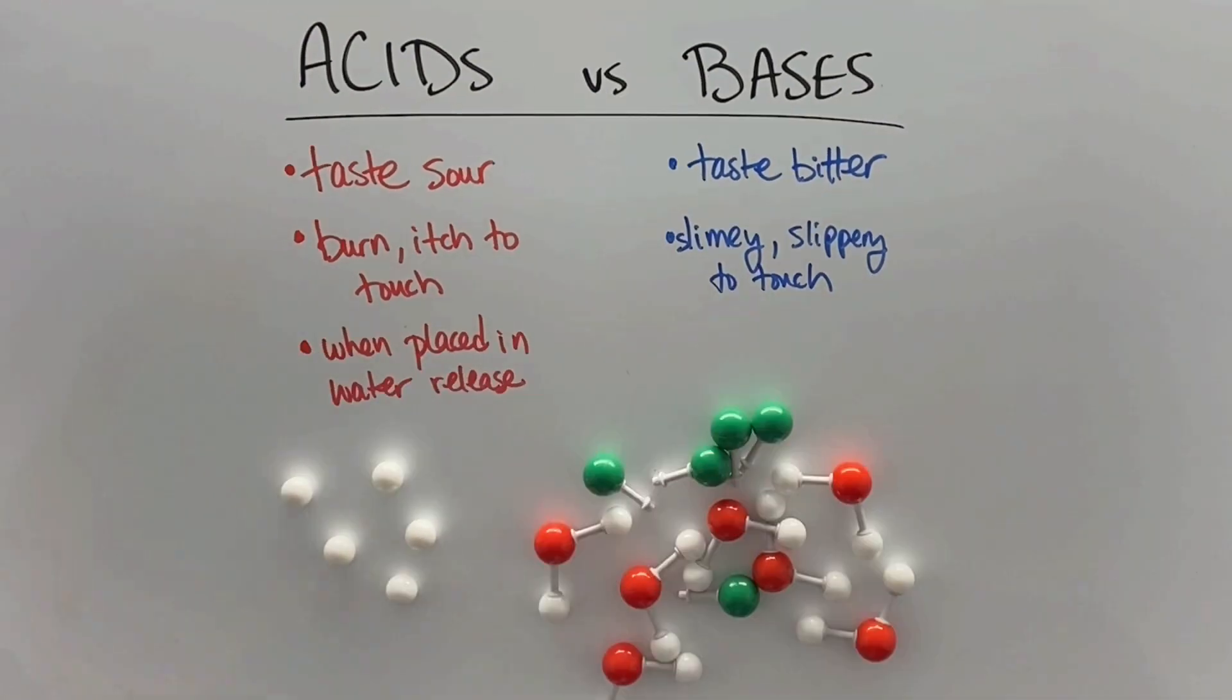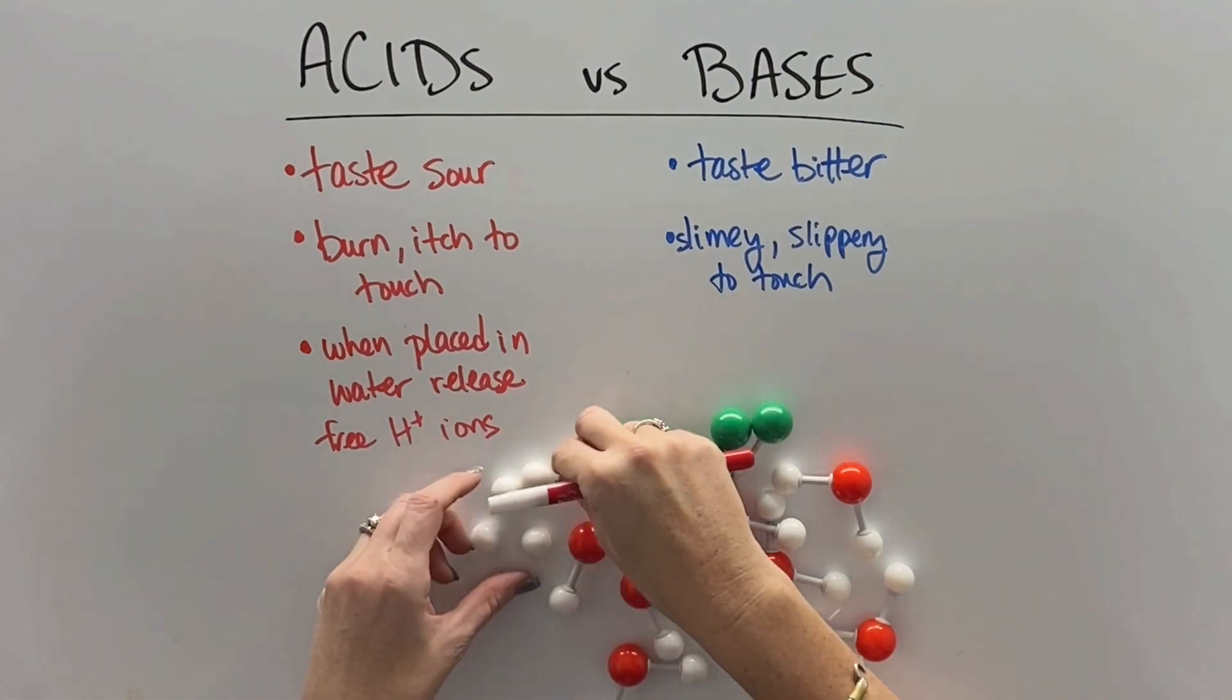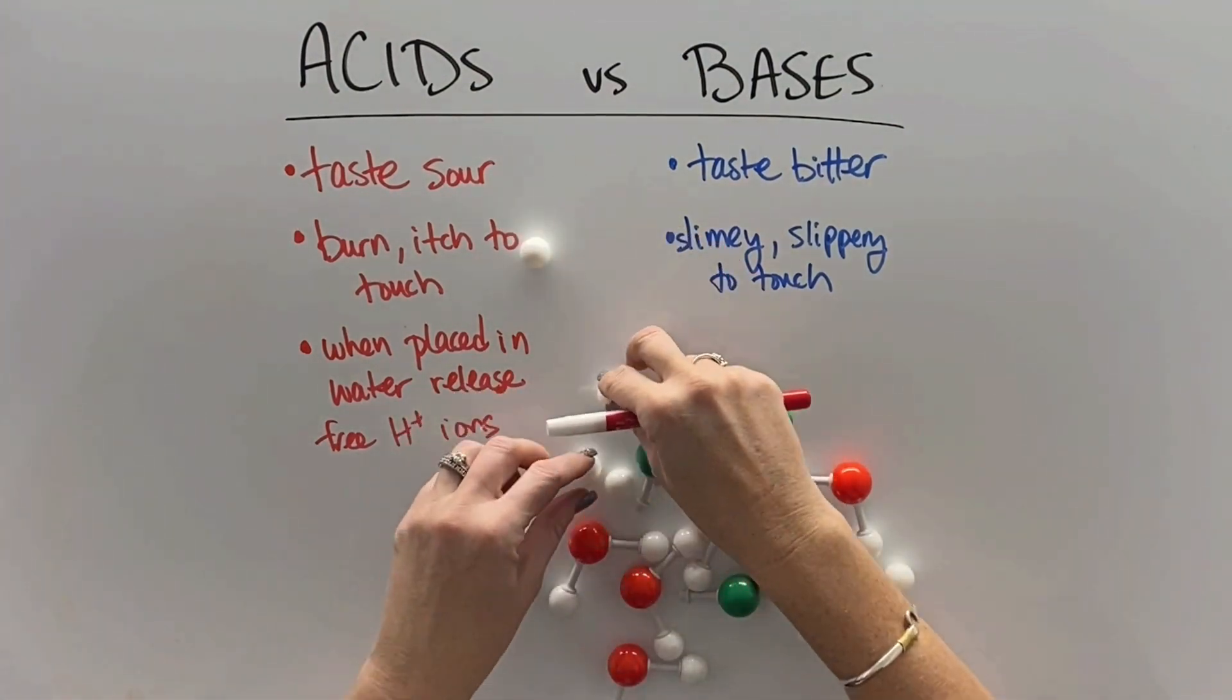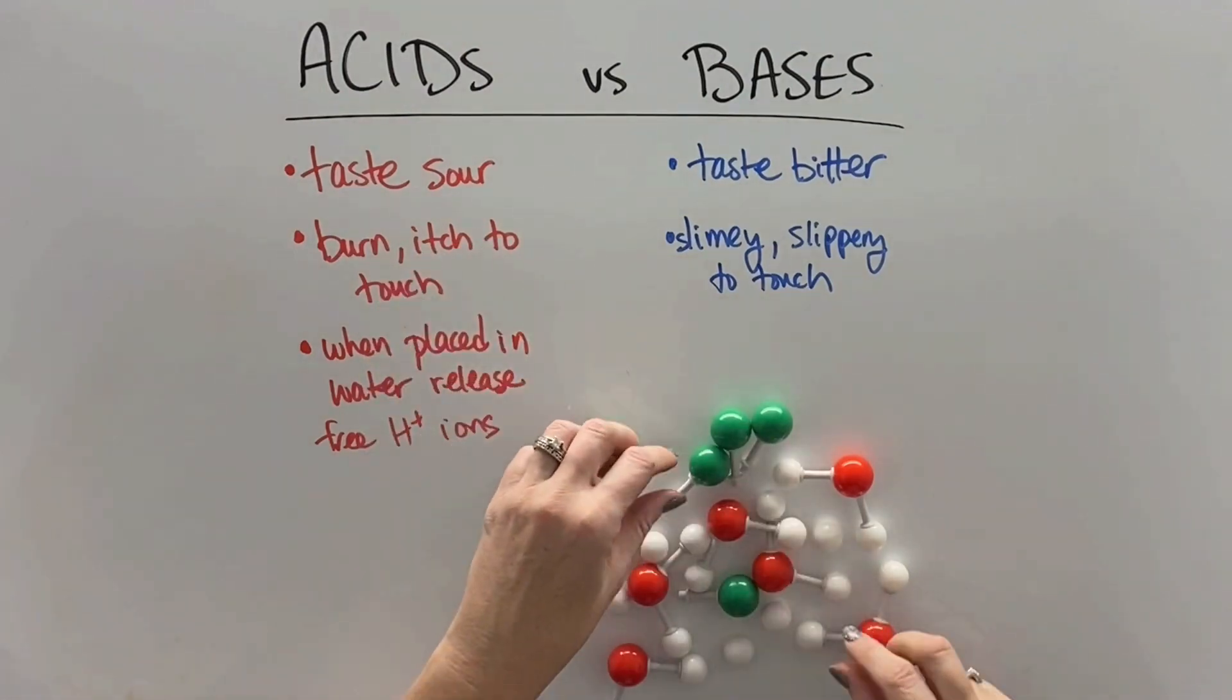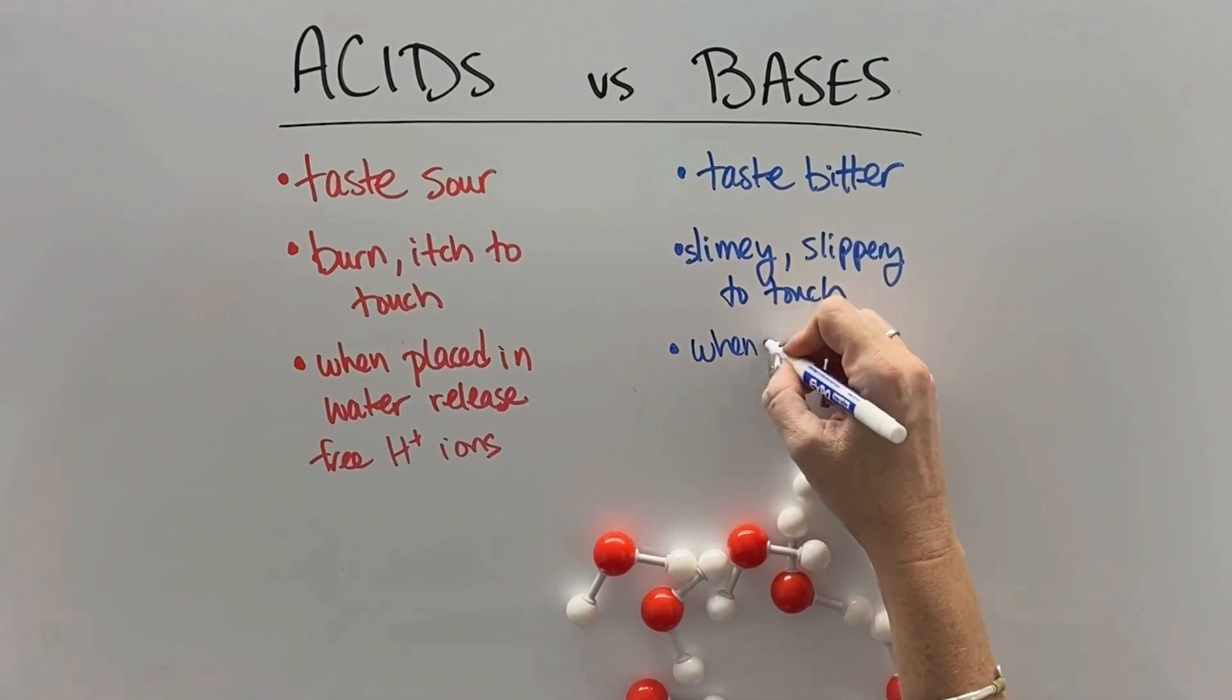So when we take an acid like hydrochloric acid and place it in water, check this out. All of the hydrogens detach, and they form these free hydrogen ions that float about in this solution, and that is the thing that is dangerous about acids.